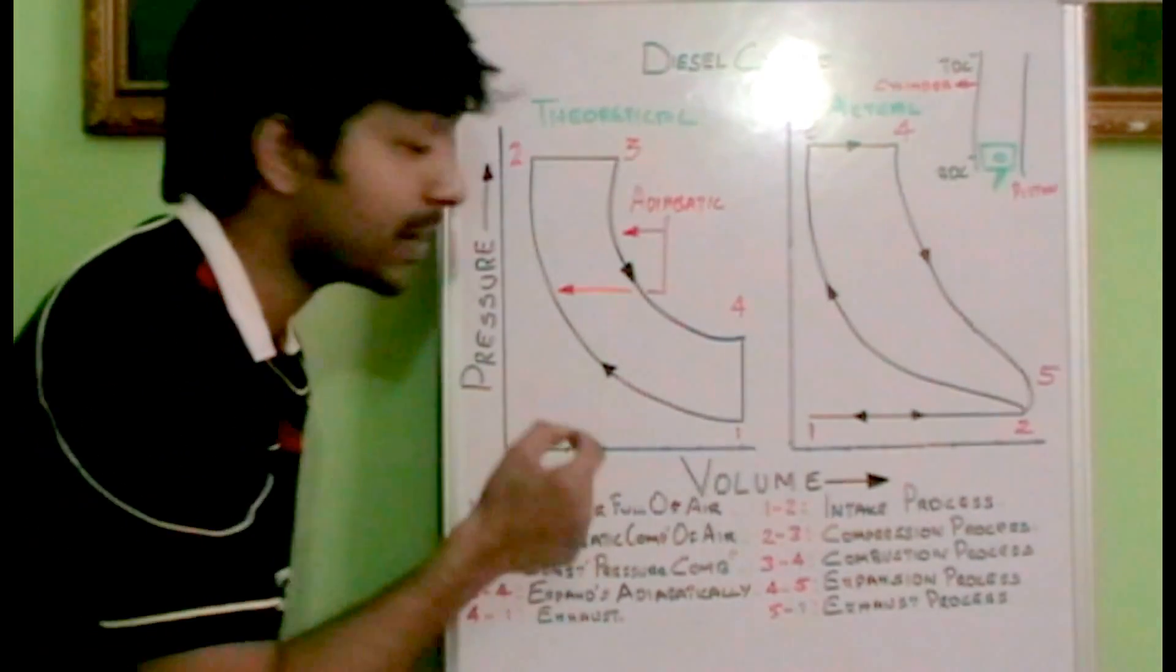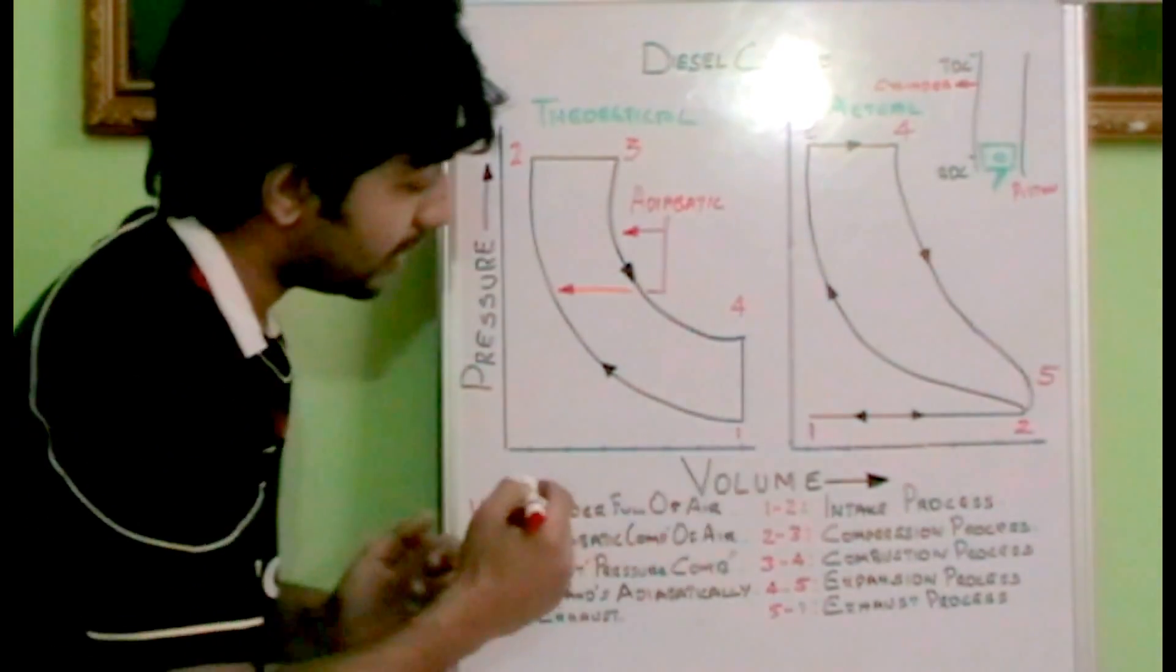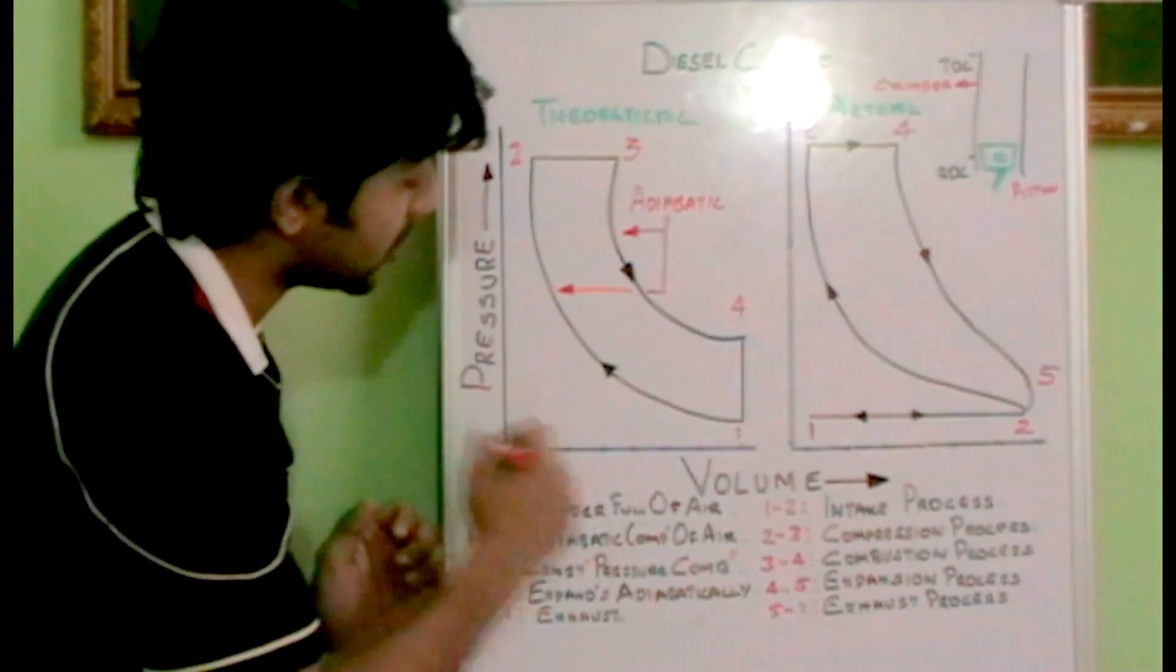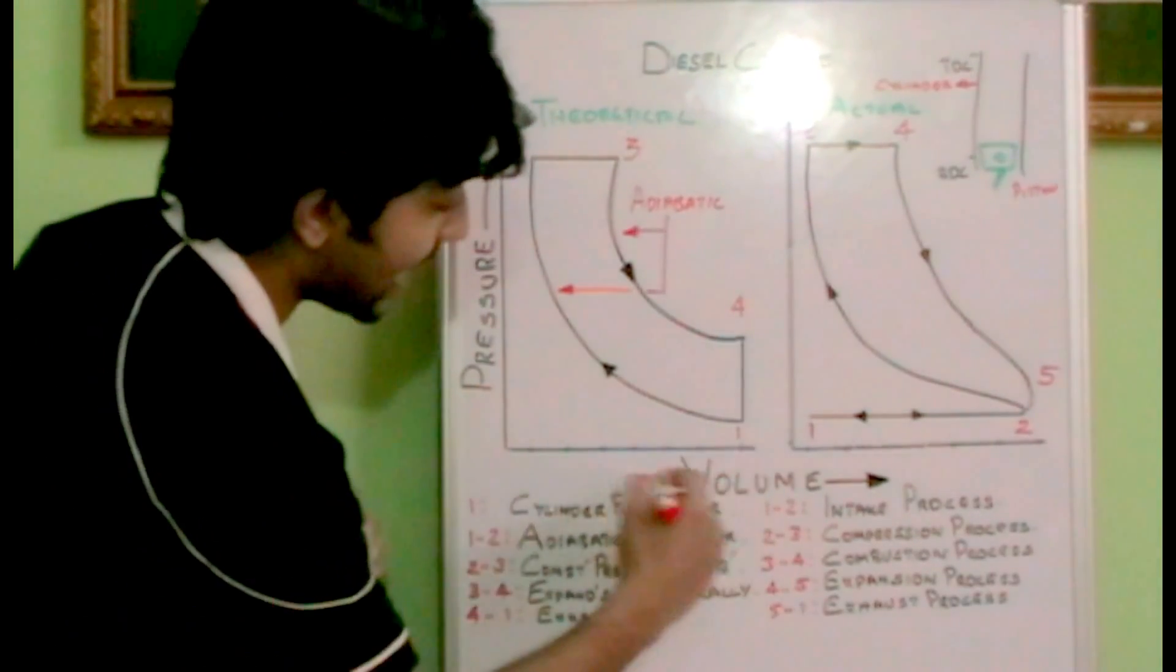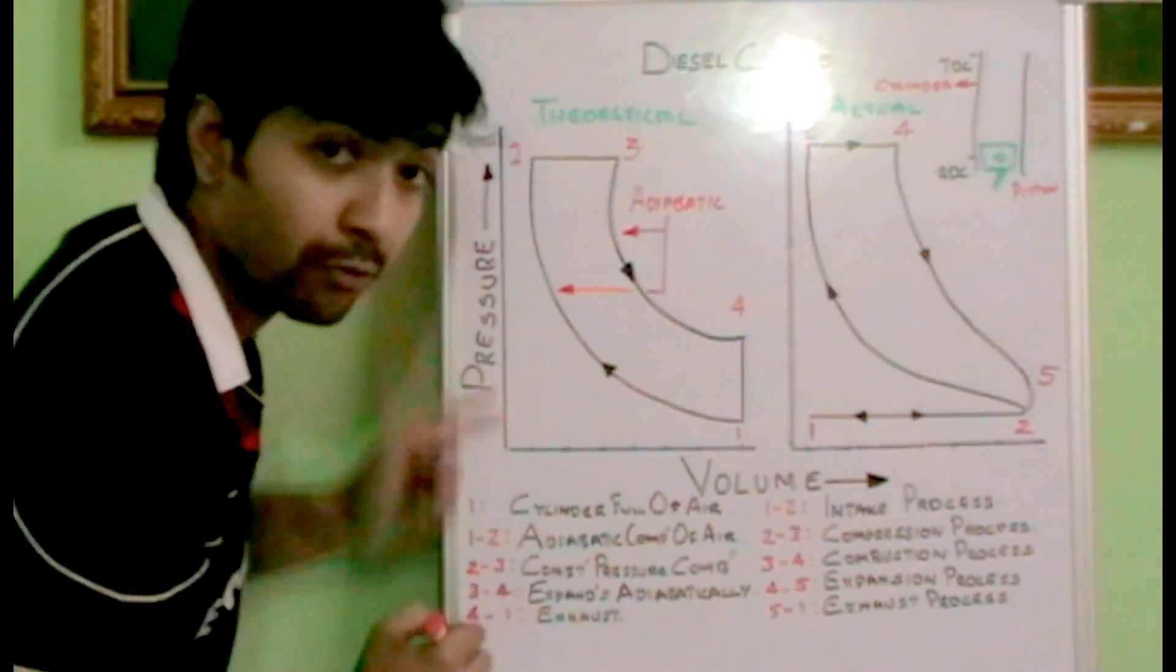Let's deal with the theoretical concept first. This is a PV diagram, a pressure volume graph. On the x-coordinate we have volume and on the y-coordinate we have pressure.